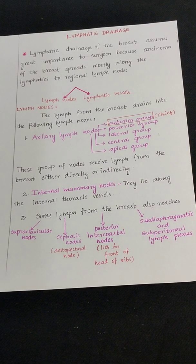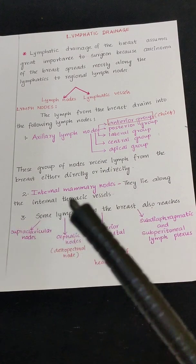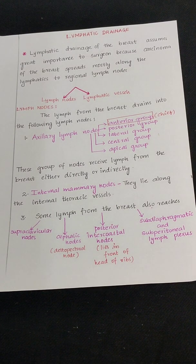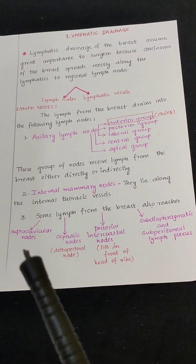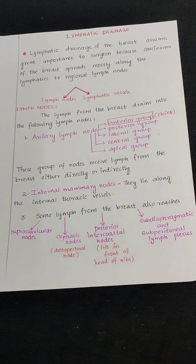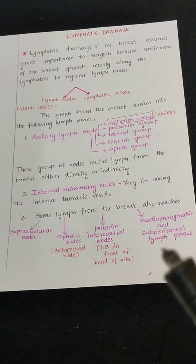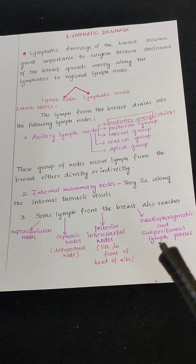The next group is the internal mammary nodes, which lie along the internal thoracic vessels. Additionally, some lymph from the breast also reaches the supraclavicular nodes, the cephalic node (also known as the deltopectoral node), posterior intercostal nodes which lie in front of the head of ribs, and through the subdiaphragmatic and subperitoneal lymph plexus.